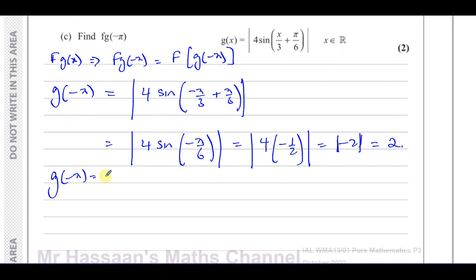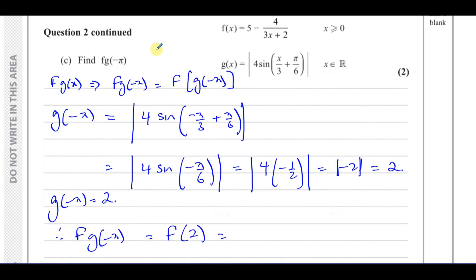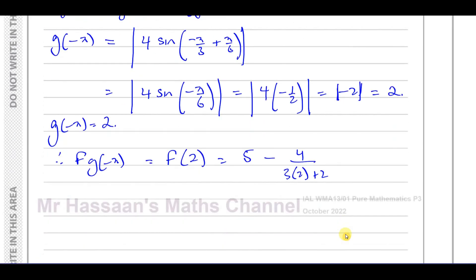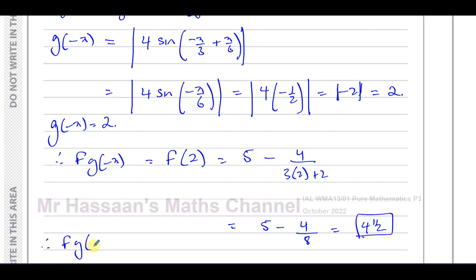The modulus of −2 equals 2, since the modulus gives the value without the negative sign — it's the distance from 0 on the number line. So g(−π) = 2. Therefore fg(−π) = f(2) = 5 − 4/(3×2 + 2) = 5 − 4/8 = 5 − 1/2 = 4.5. So fg(−π) = 4.5.